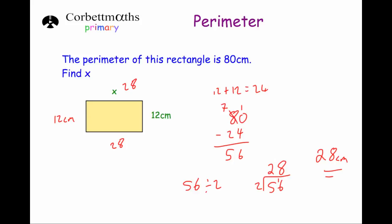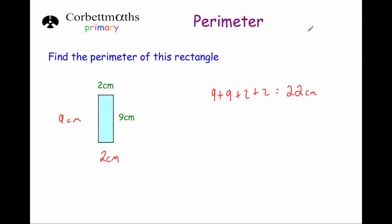To find the perimeter of a shape, you just add up the total distance around the outside. If there are any missing sides, make sure you find those first, and also make sure you use the correct units.